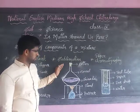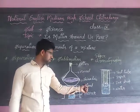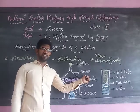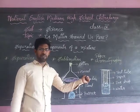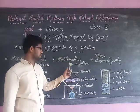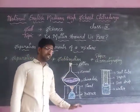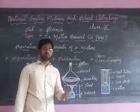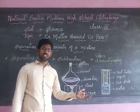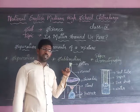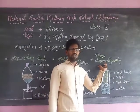For sublimation, we use a burner and a china dish in which we place the mixture of ammonium chloride and sand. We place a funnel inverted above the china dish, and the mouth of the funnel is closed with cotton. We then use the burner to heat the mixture, and one component starts sublimating when it reaches its boiling point.